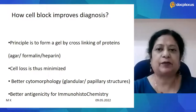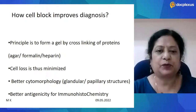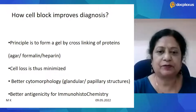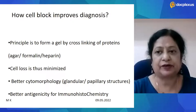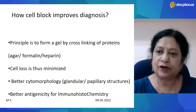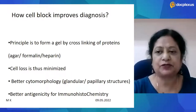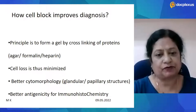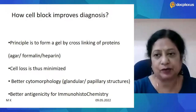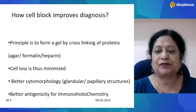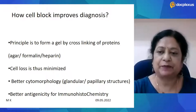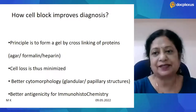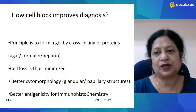The cell block technique works by taking the fluid and forming a gel through cross-linking of proteins such as agar, formalin, or heparin. Cell loss is minimized compared to a smear method. The morphological pattern — glandular or papillary structures — can be identified much better, and there is much better antigenicity, allowing us to use monoclonal antibodies to target markers by the immunohistochemical method.